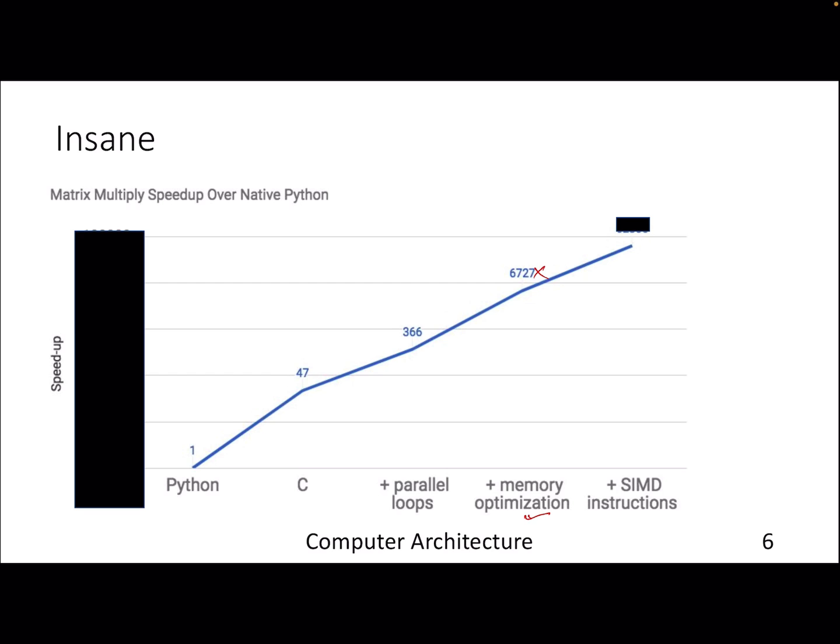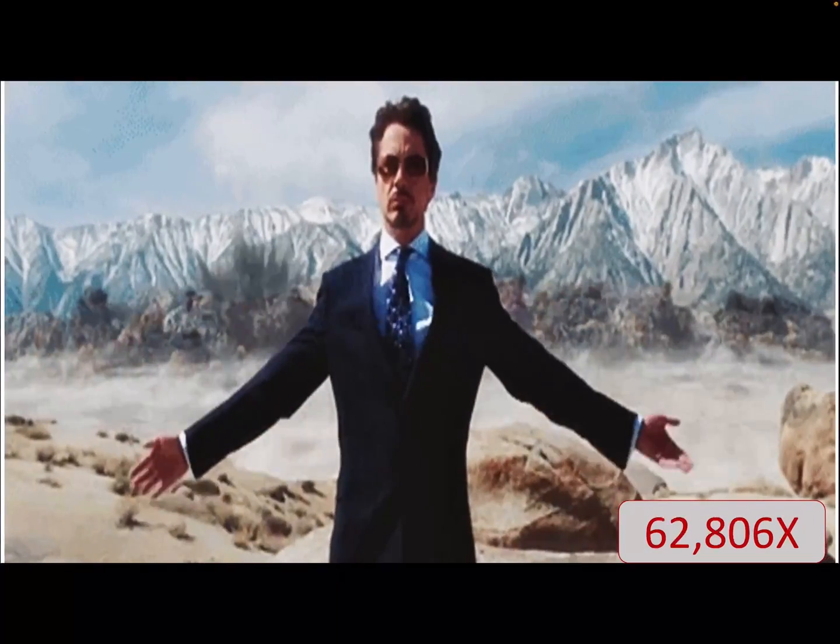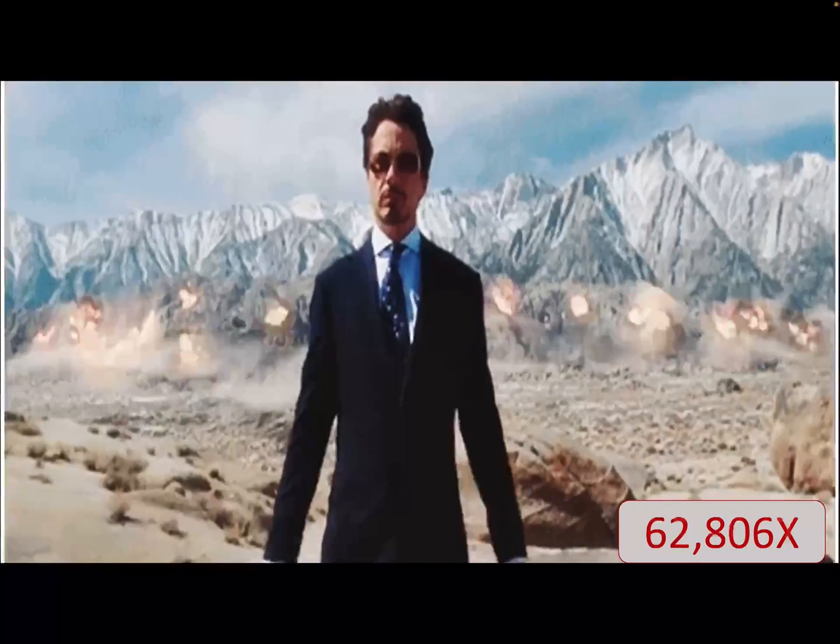Can you do better? Because this number itself is insane. Yes, you can still do better with the usage of something called SIMD instructions. We haven't looked into it, but you can go and have a look. You can speculate what the value should be if you use all these optimizations. The value is actually 62,000x. 62,000 times faster compared to your Python code, which is insane.